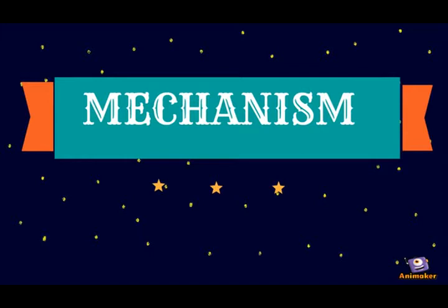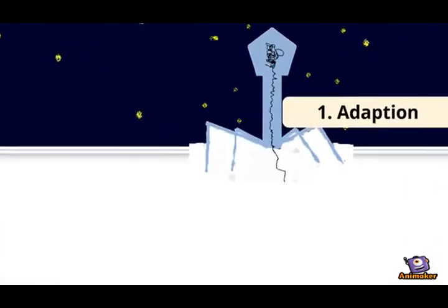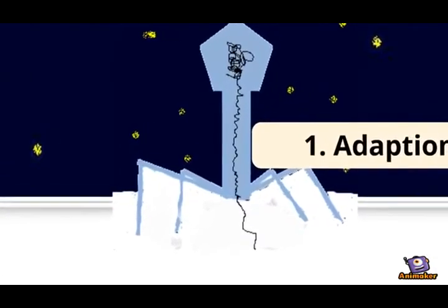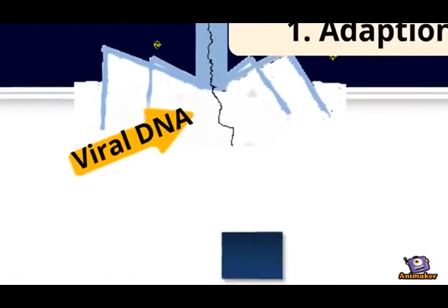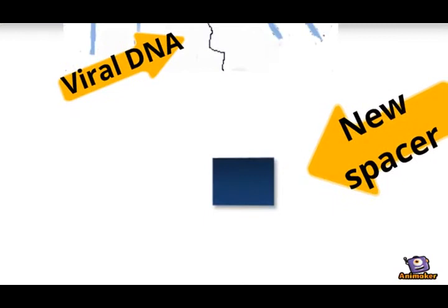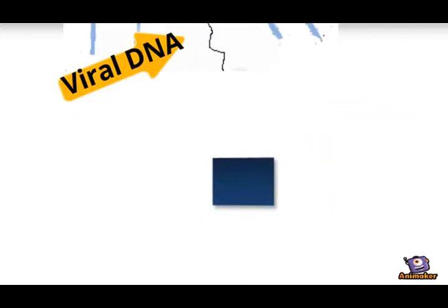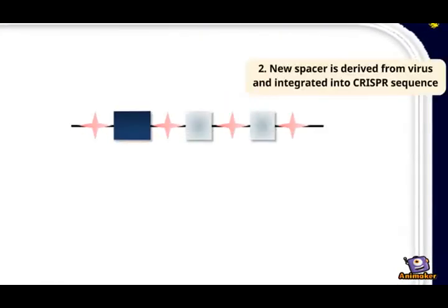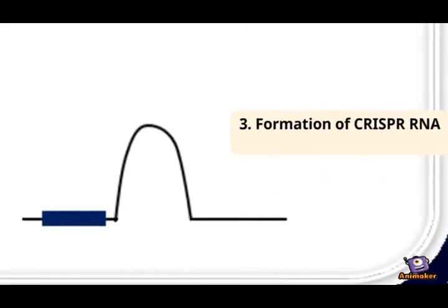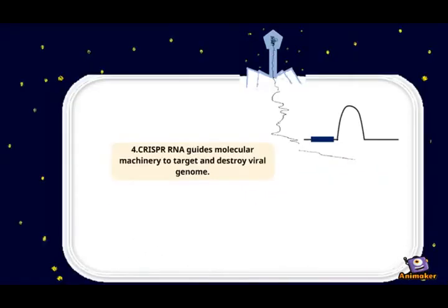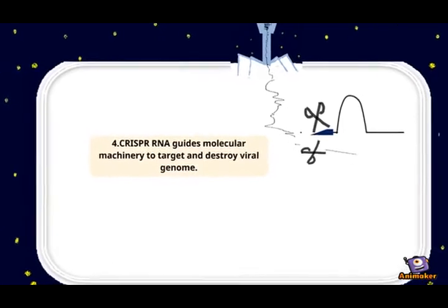The first step is adaptation. When a virus attacks bacteria, it initiates the CRISPR-Cas system. Viral DNA is processed into short segments that form a novel spacer. During the expression step, the new spacer integrates into the CRISPR sequence, resulting in the formation of CRISPR RNA. CRISPR RNA will then guide molecular machinery to target and cleave the viral genome.